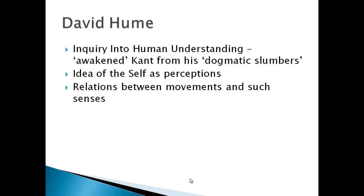Hume was so influential. His book, The Inquiry into Human Understanding, was said to awaken Kant from his dogmatic slumbers — a pretty well-written phrase. Hume's major idea in his first book, published under an anonymous name, was that the self was also a perception. Remember that Descartes argued that the only way people can know anything exists is by looking at the self itself — if we know we are a thinking being, then at least that fact exists outside of everything.